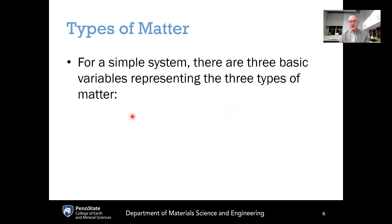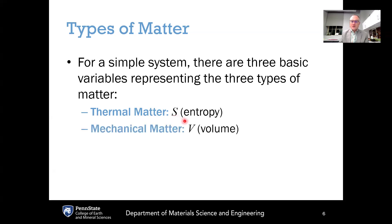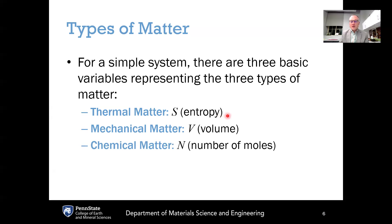There are different types of matter associated with these three types of energy. For a simple system, three basic variables represent these types of matter. For thermal energy, the corresponding thermal matter is entropy, denoted S. For mechanical energy, the corresponding mechanical matter is volume, V — how much space the system takes up. And for chemical energy, the corresponding chemical matter is N, the number of moles of the given chemical species in the system.